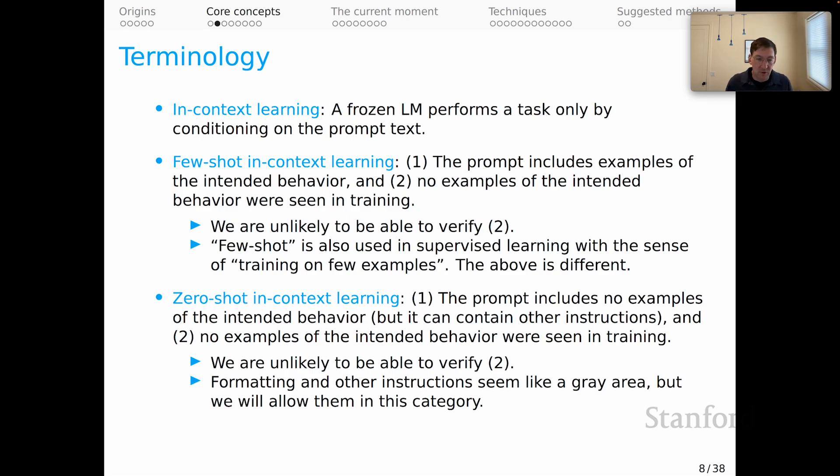For item one, this is more interesting. I'll say that formatting and other instructions that you include in the prompt are a kind of gray area, but let's allow them in the zero-shot category. What I mean by that is that as you give more elaborate instructions, you might in effect be demonstrating the intended behavior. But the other side of this is that instructions are conceptually very different kinds of things for machine learning in general than actual demonstrations. And so it's interesting to separate out the case where you demonstrate directly from the case where you just describe the intended behavior. And so we'll allow mere descriptions to still be zero-shot.